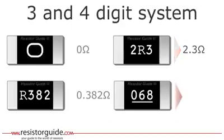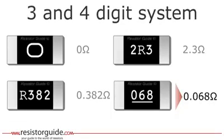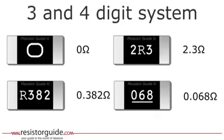Due to space constraints, sometimes the numbers are underlined instead of using an R. So this resistor has a value of 0.068 ohms. Remember that deviations from these systems are common, so it is always good practice to check the manufacturer's datasheet.